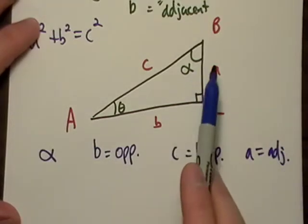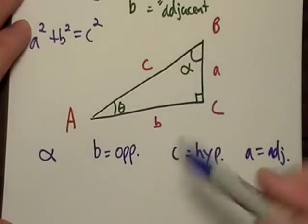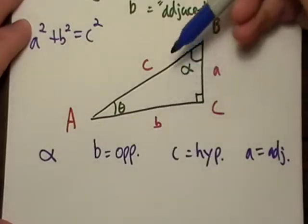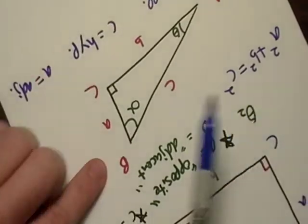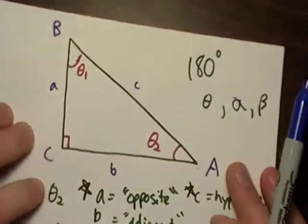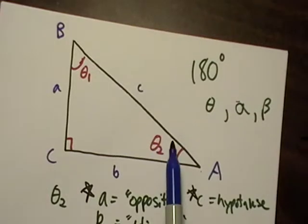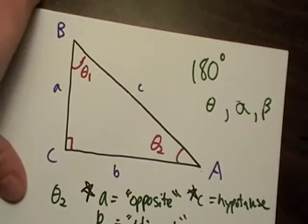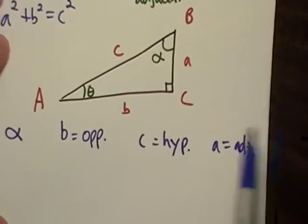So A has to be the adjacent side. Notice how, this time, it's on my left-hand side. If I'm looking at it from here, it'd be on my left. Whereas on this one, we're looking at theta 2. Well, it was also on the left. So I redrew it.